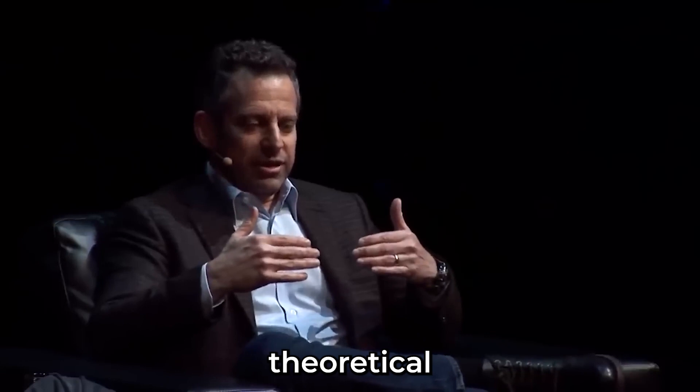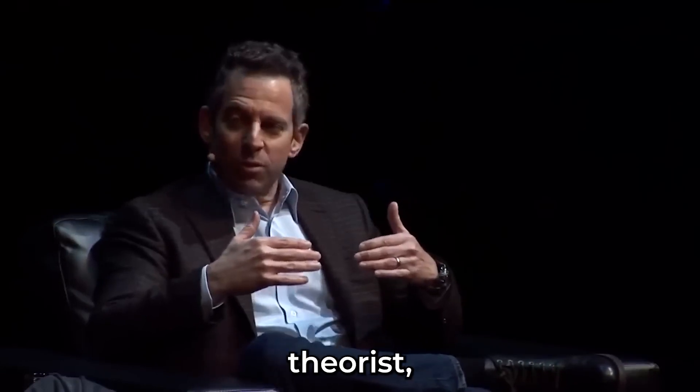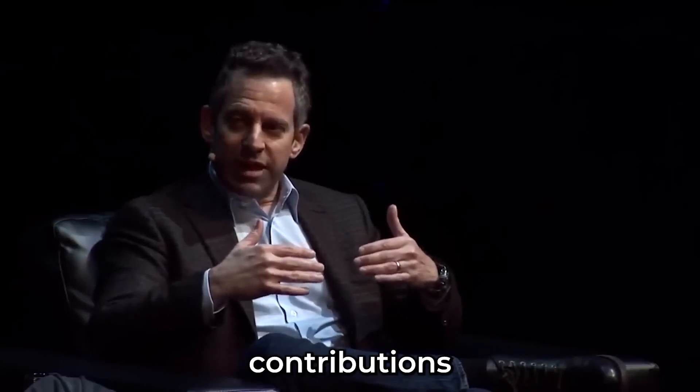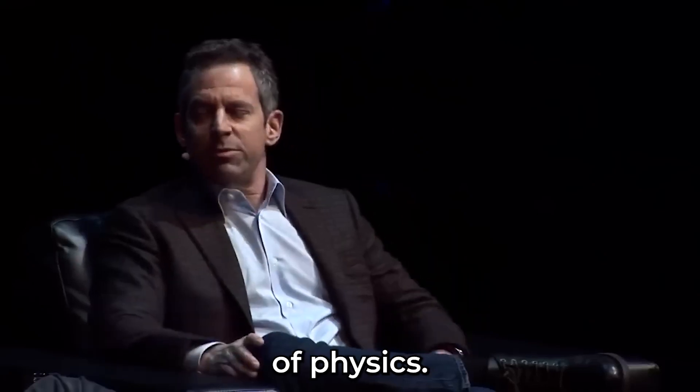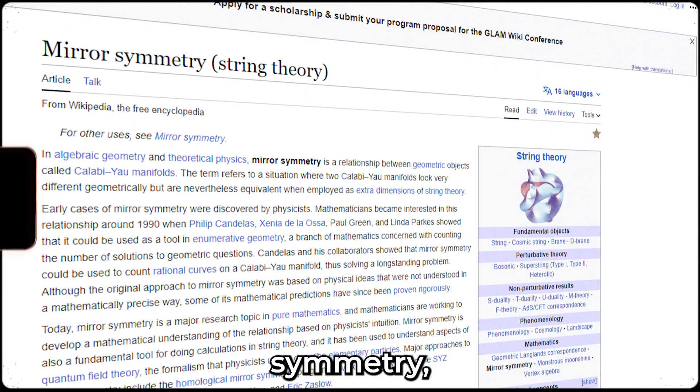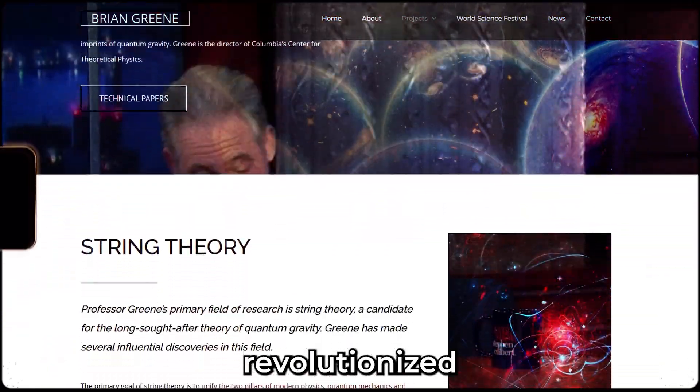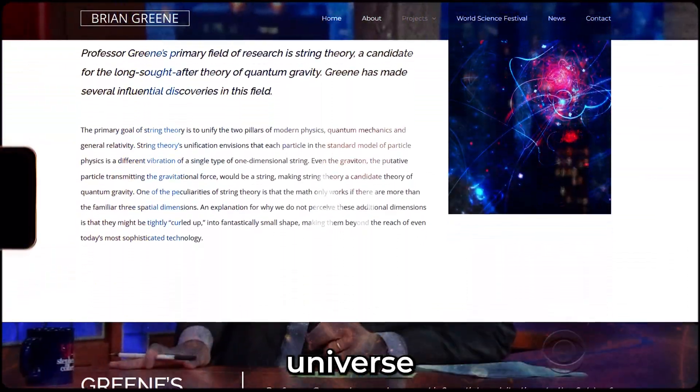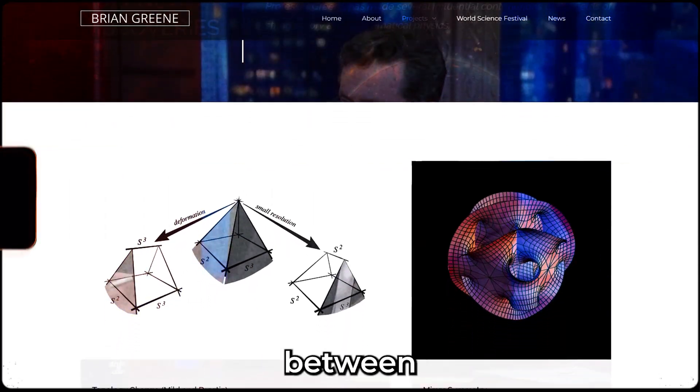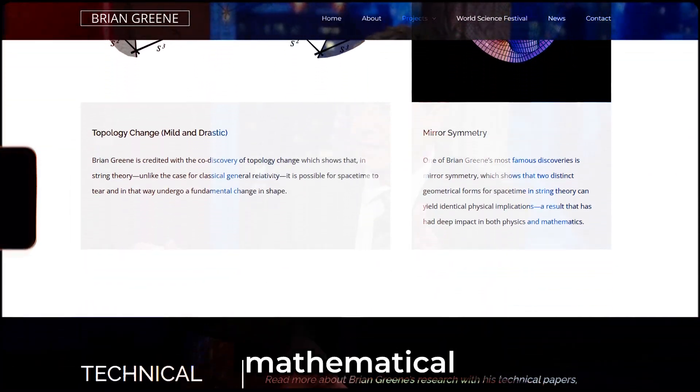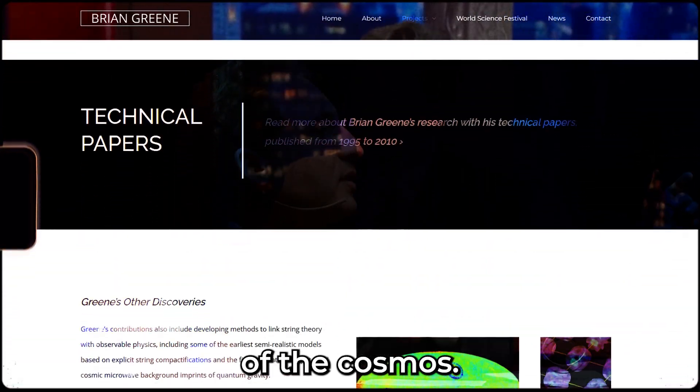Brian Greene, a distinguished theoretical physicist and string theorist, has made significant contributions to the field of physics. His work on mirror symmetry, a concept within superstring theory, has revolutionized our understanding of the universe by revealing unexpected relationships between seemingly different mathematical descriptions of the cosmos.